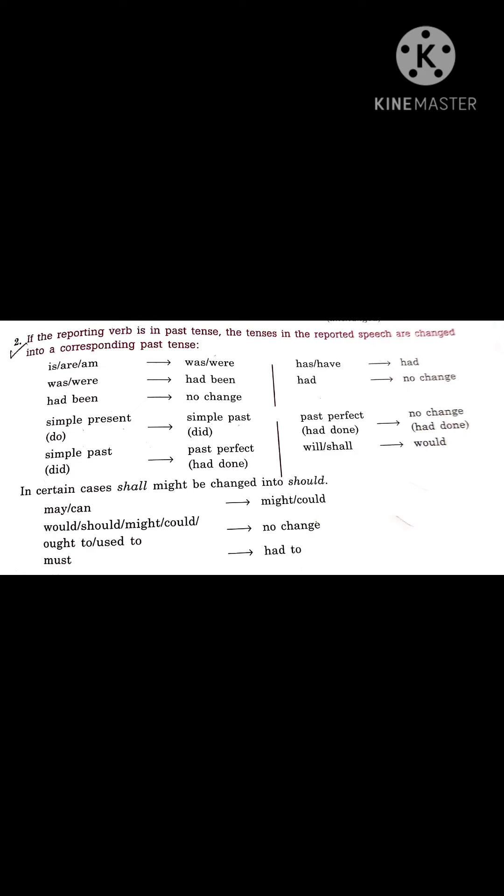Will and shall change to 'would'. In certain cases, shall may be changed to 'should'. May changes to 'might'; can changes to 'could'. Would, should, might, could, ought to, and used to — there is no change. Must changes to 'had to'.